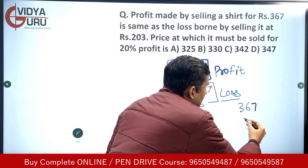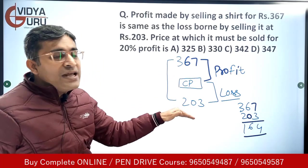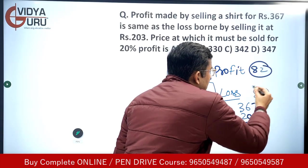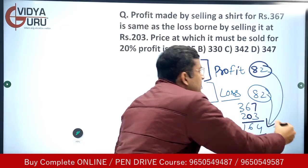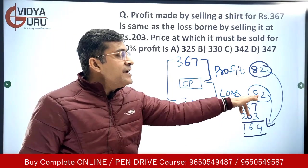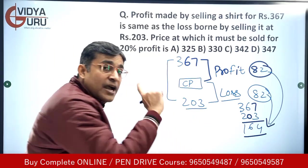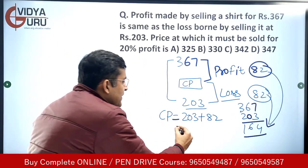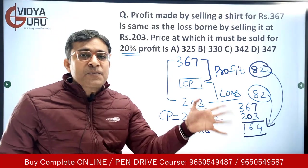The total gap between 367 and 203 is 164. Since profit equals loss, the profit is 82 and the loss is 82 — 82 plus 82 gives the total gap of 164. When the shirt is sold at 203 rupees, there is a loss of 82 rupees. The cost price is higher than 203 by 82 rupees, so cost price is 203 plus 82, which equals 285.